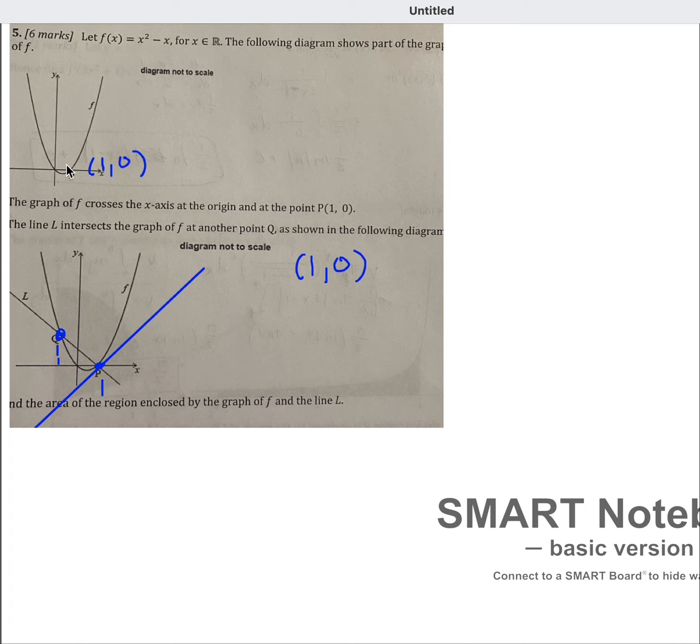So we do know that this point is 1, 0. Right. And to find the, we need to find the equation of the normal. So we can take the integral from A to B of the normal line minus the function in order to find this area right here I'm putting in green between the line and the curve. So we already have the function.